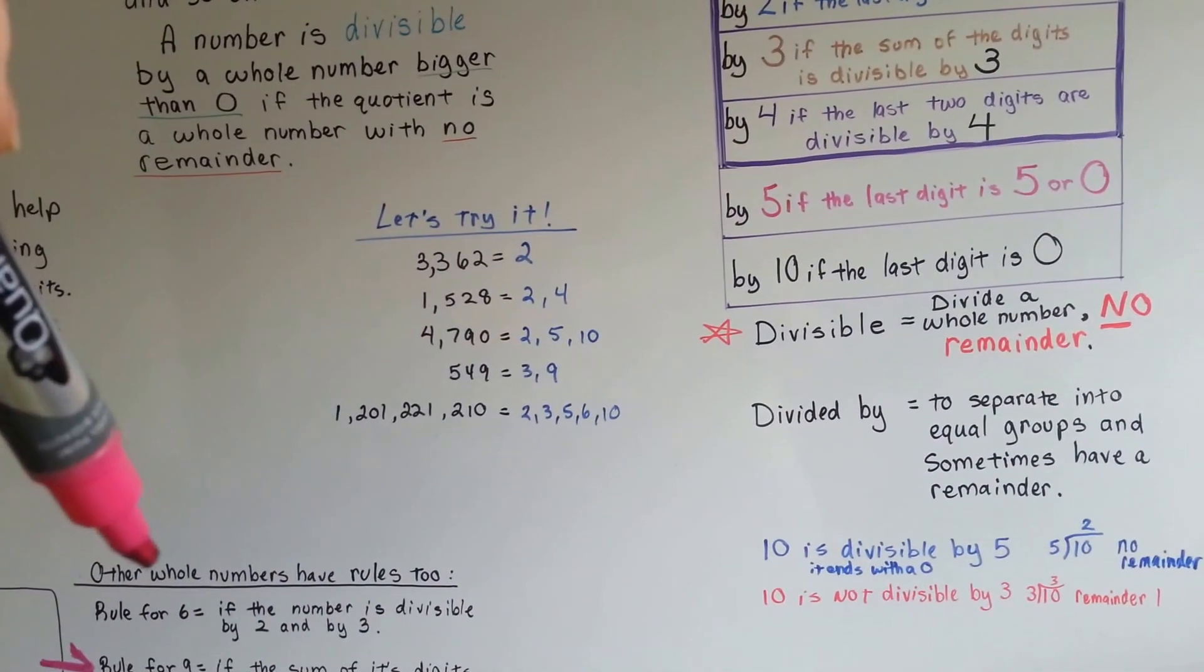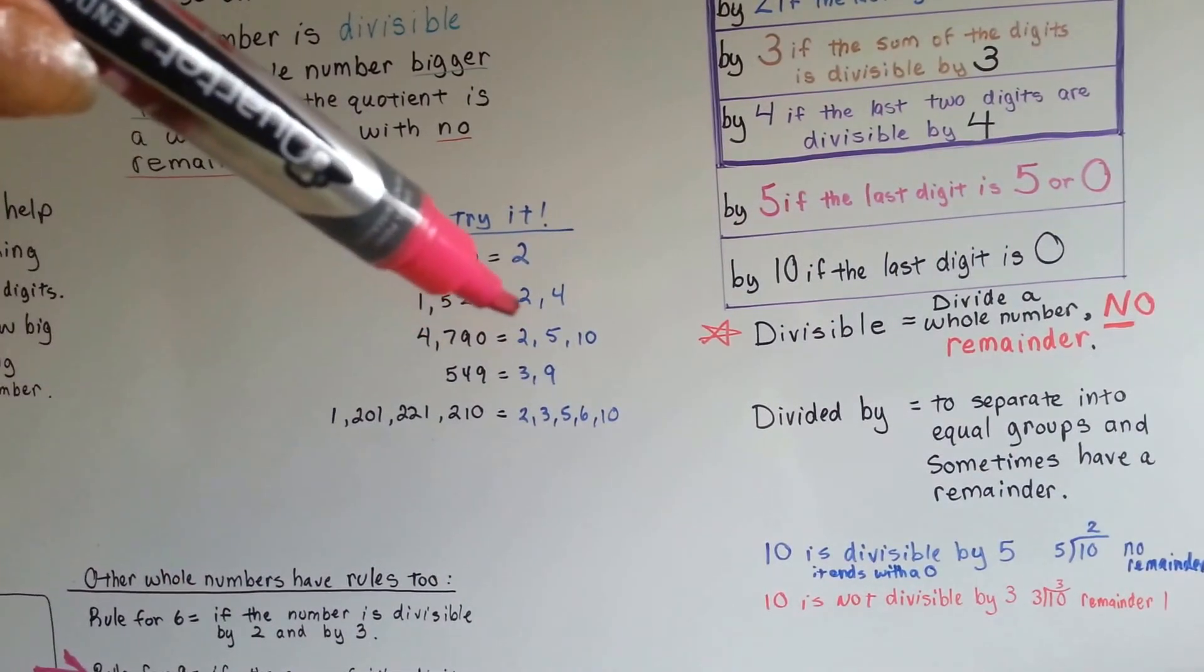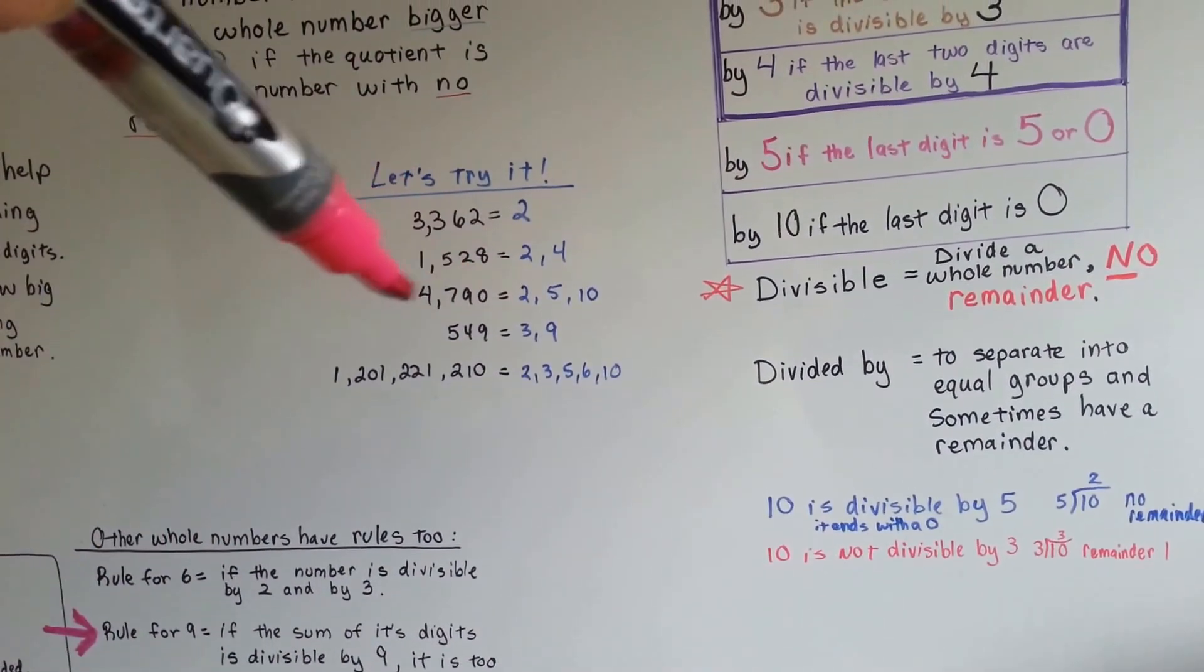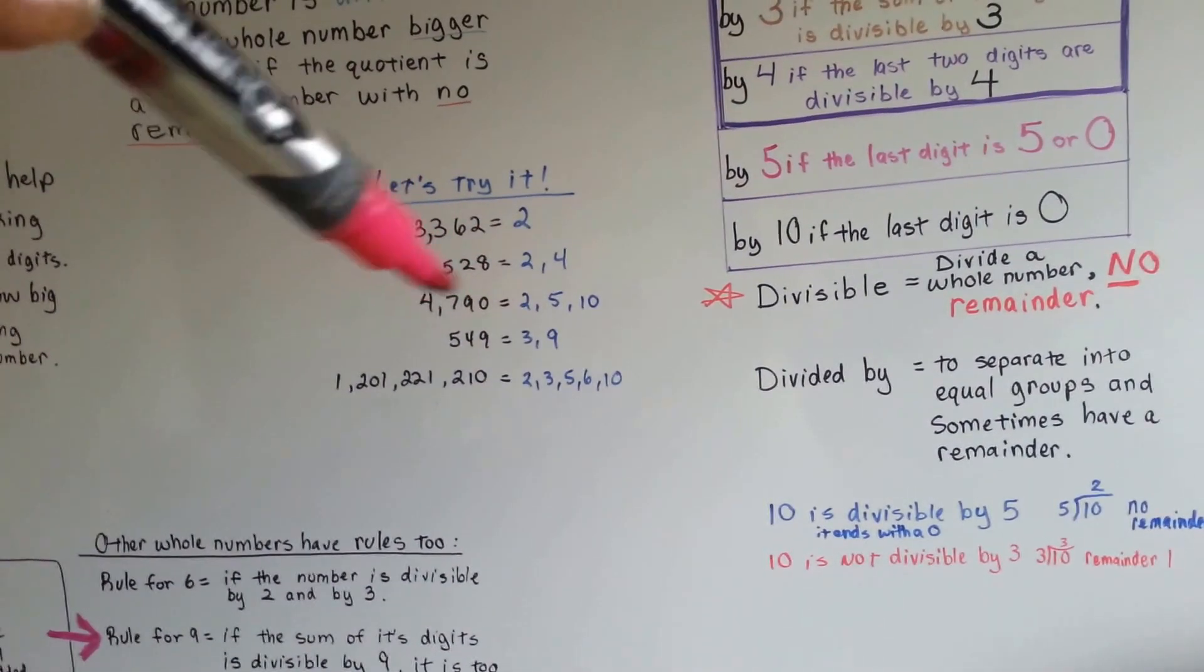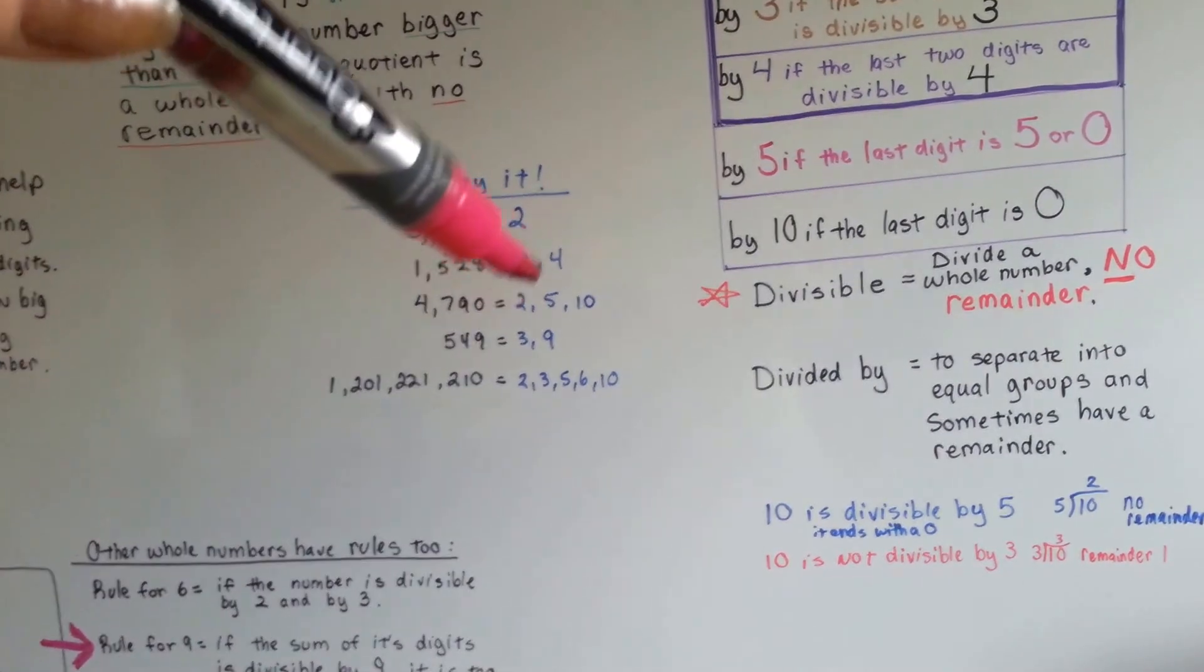How about 6? No, it's not divisible by 3, so 2, but not 3, so 6 is out. How about 9? Well, we added it up, and we got 20, and 9 doesn't go in evenly to 20, so 9 doesn't work either. So we got 2, 5, and 10.